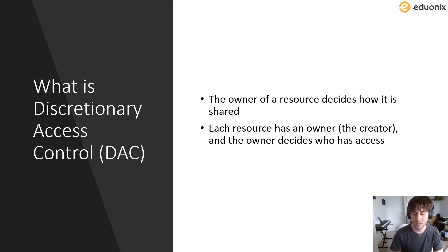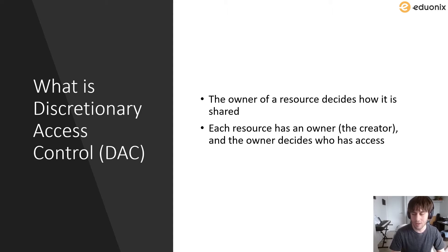Starting off, what actually is discretionary access control? Discretionary access control is a situation where the owner of a resource decides how it is shared. A resource can be anything like a file or a directory — some sort of file on our system would typically be considered a resource. The person who creates that resource is typically designated as the owner, and the owner is going to be able to decide who has access to this specific file or resource.